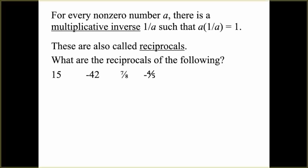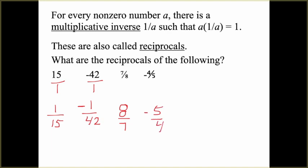To find the reciprocals: 15 is like 15 over 1, so its reciprocal is 1 over 15. For negative 42, the reciprocal is 1 over 42, but it stays negative — the negative sign must be in the numerator or in front of the fraction. Do not put a negative sign in the denominator; that is improper mathematics. For 7 eighths, we flip it and get 8 sevenths. For negative 4 fifths, we flip it to get negative 5 fourths, with the negative in the numerator or out front.